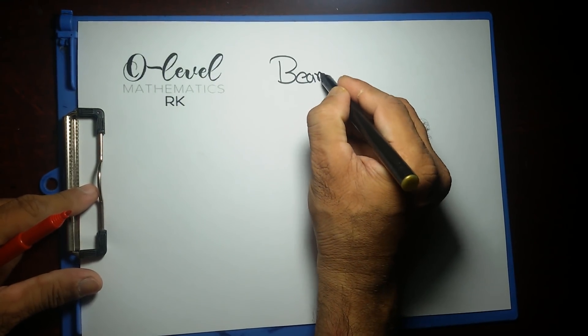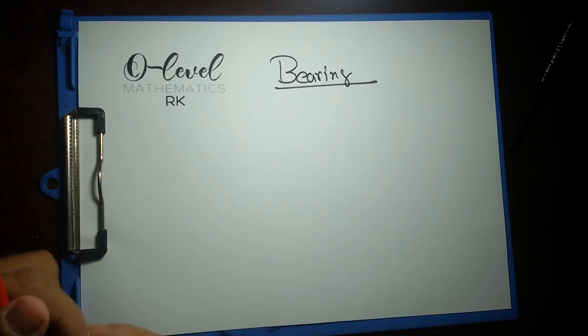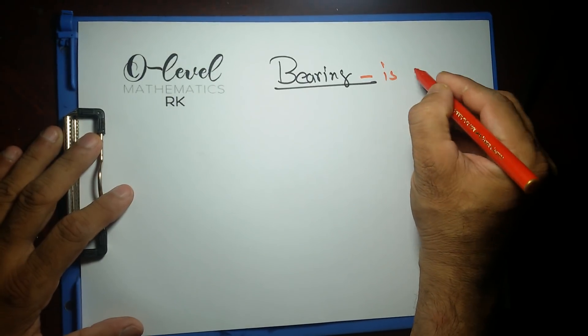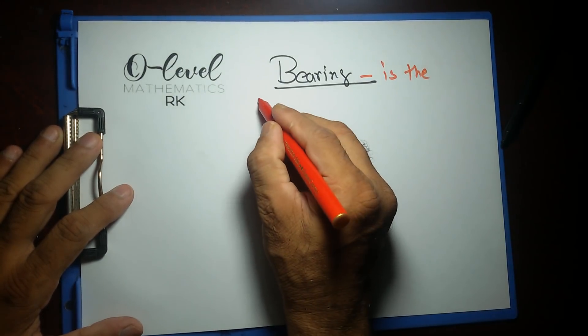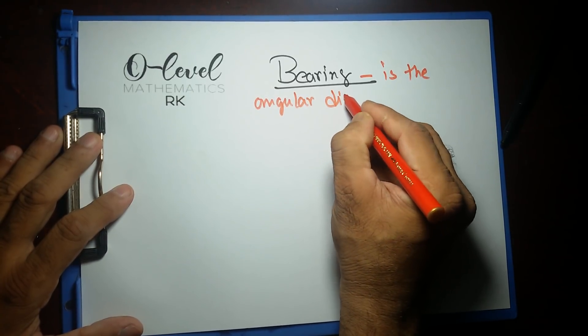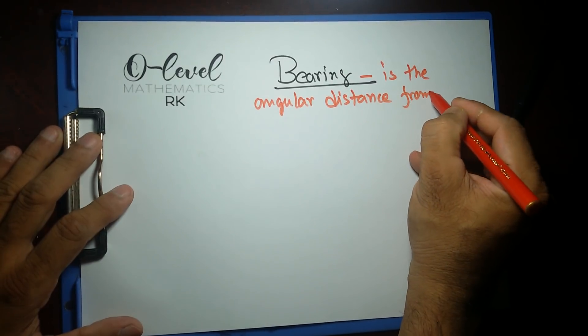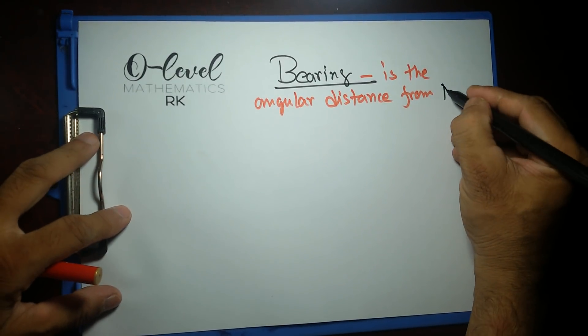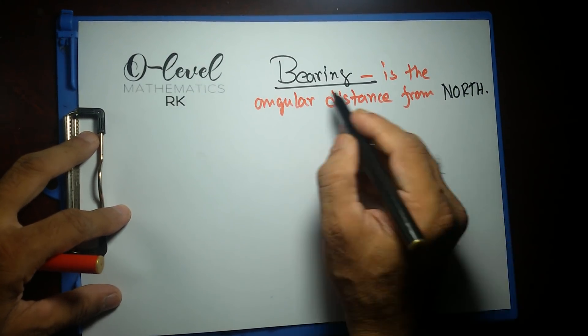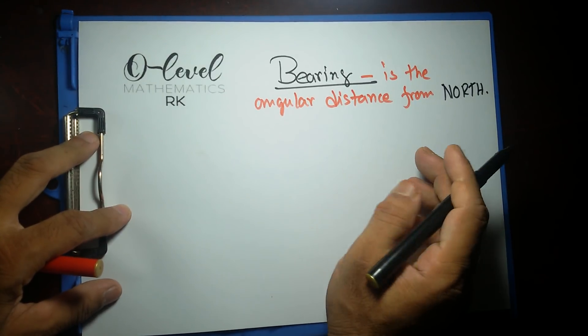What do we understand by bearing? Bearing is the angular distance from north. All you have to remember for the definition of bearing is: bearing is the angular distance from north.